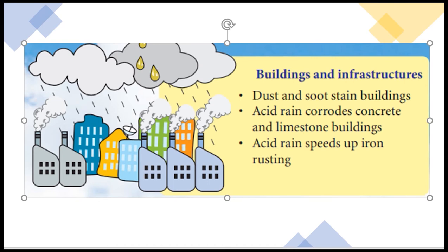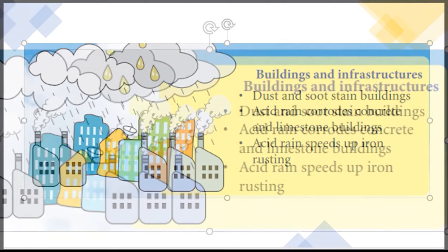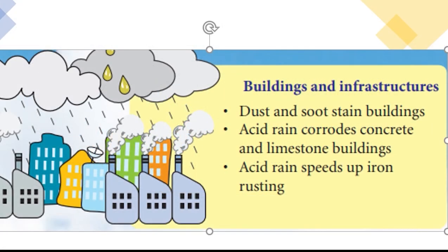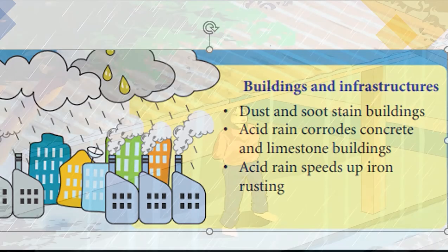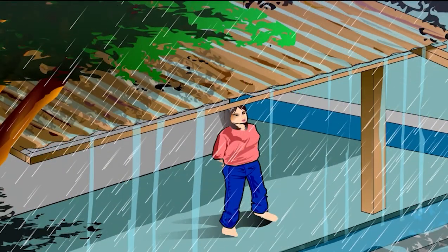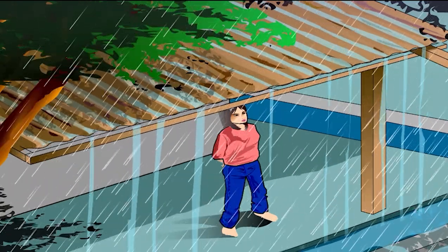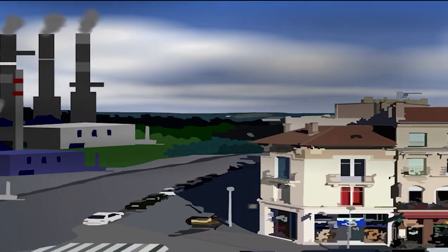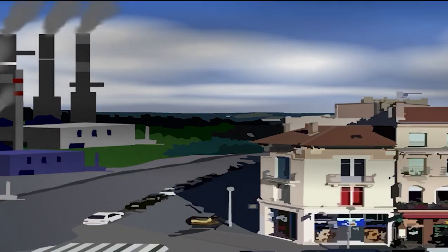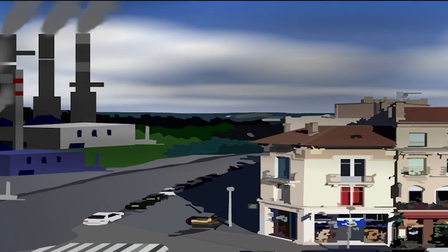Next, let's look at the effects of air pollution on buildings and infrastructures. Dust and soot stain buildings. Acid rain corrodes concrete and limestone buildings, and also speeds up iron rusting. What is acid rain? How does acid rain affect our environment and us?